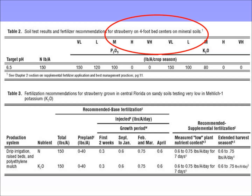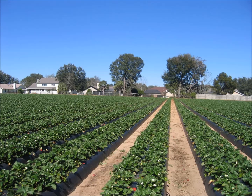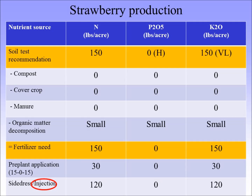This is an example where there is no cover crop and no compost — we're just doing the conventional way to keep the math simple. So we start again from the recommendation. That's your field, that's your beds, and that's the alleys that you don't want to fertilize. The fertilizer need is 150-0-150. The recommendation is to put 30 of N, 0 of P, and 30 of K2O pre-plant, and then the difference — 150 minus 30 is 120 — that's what we're going to inject.